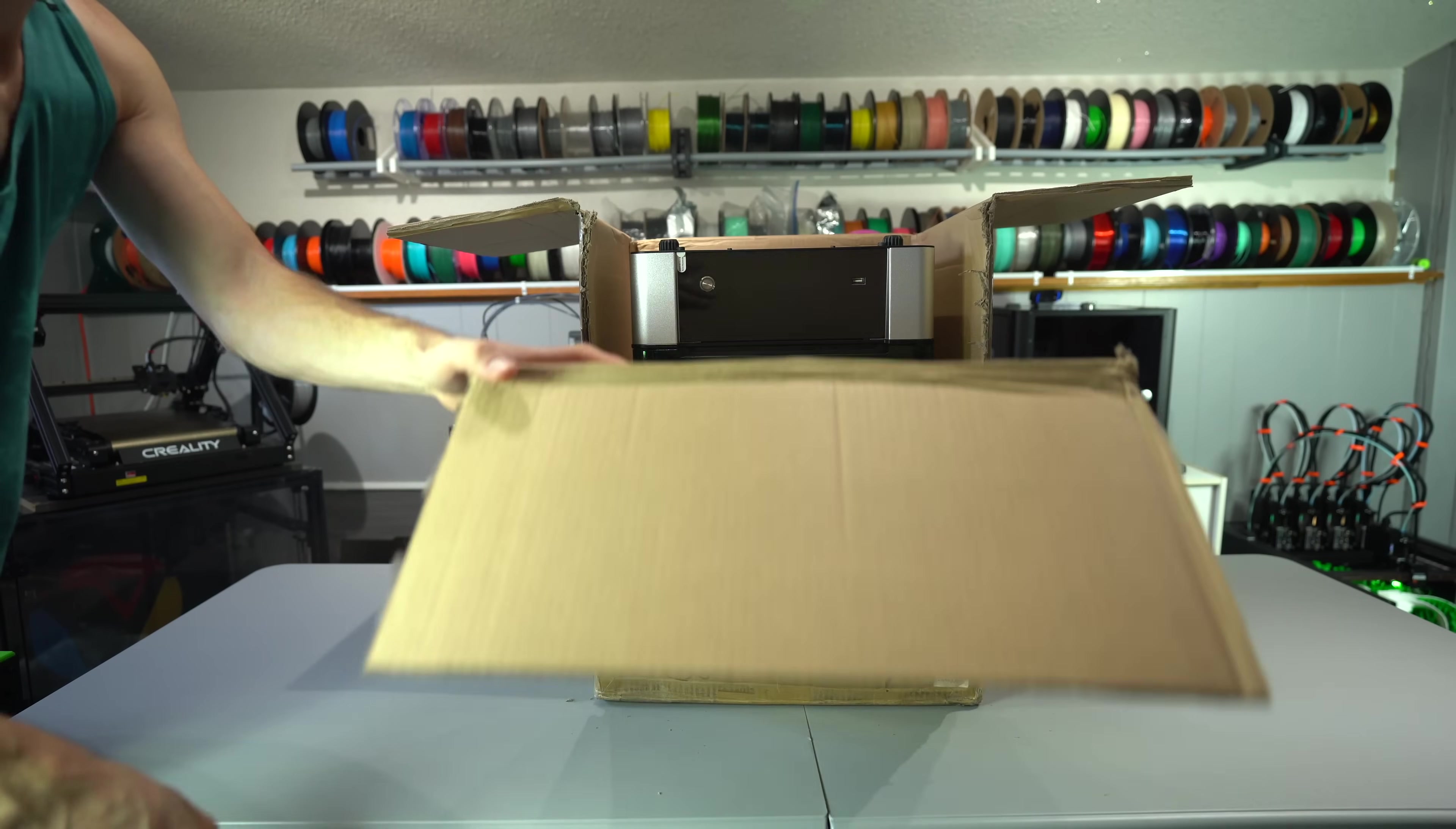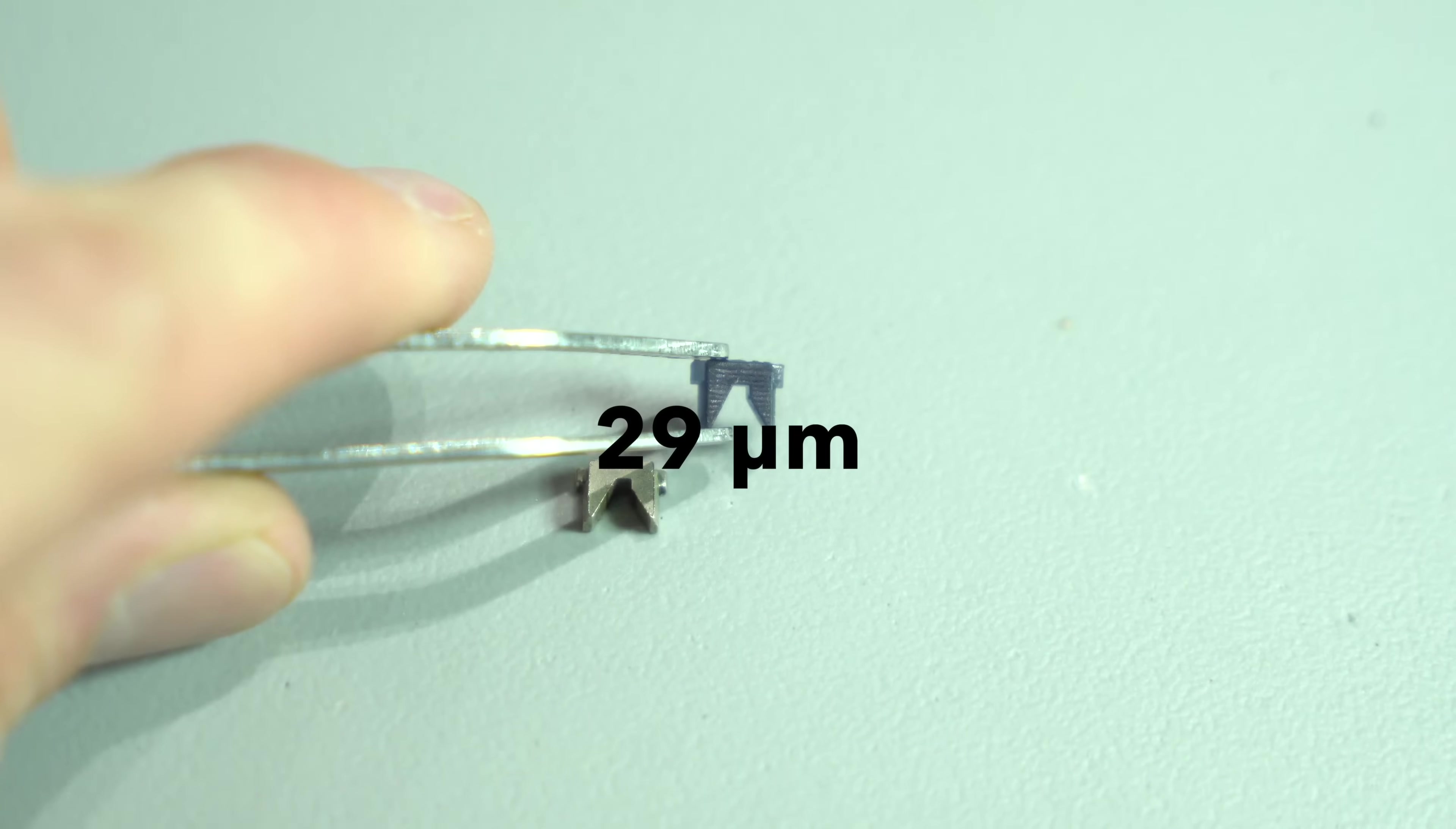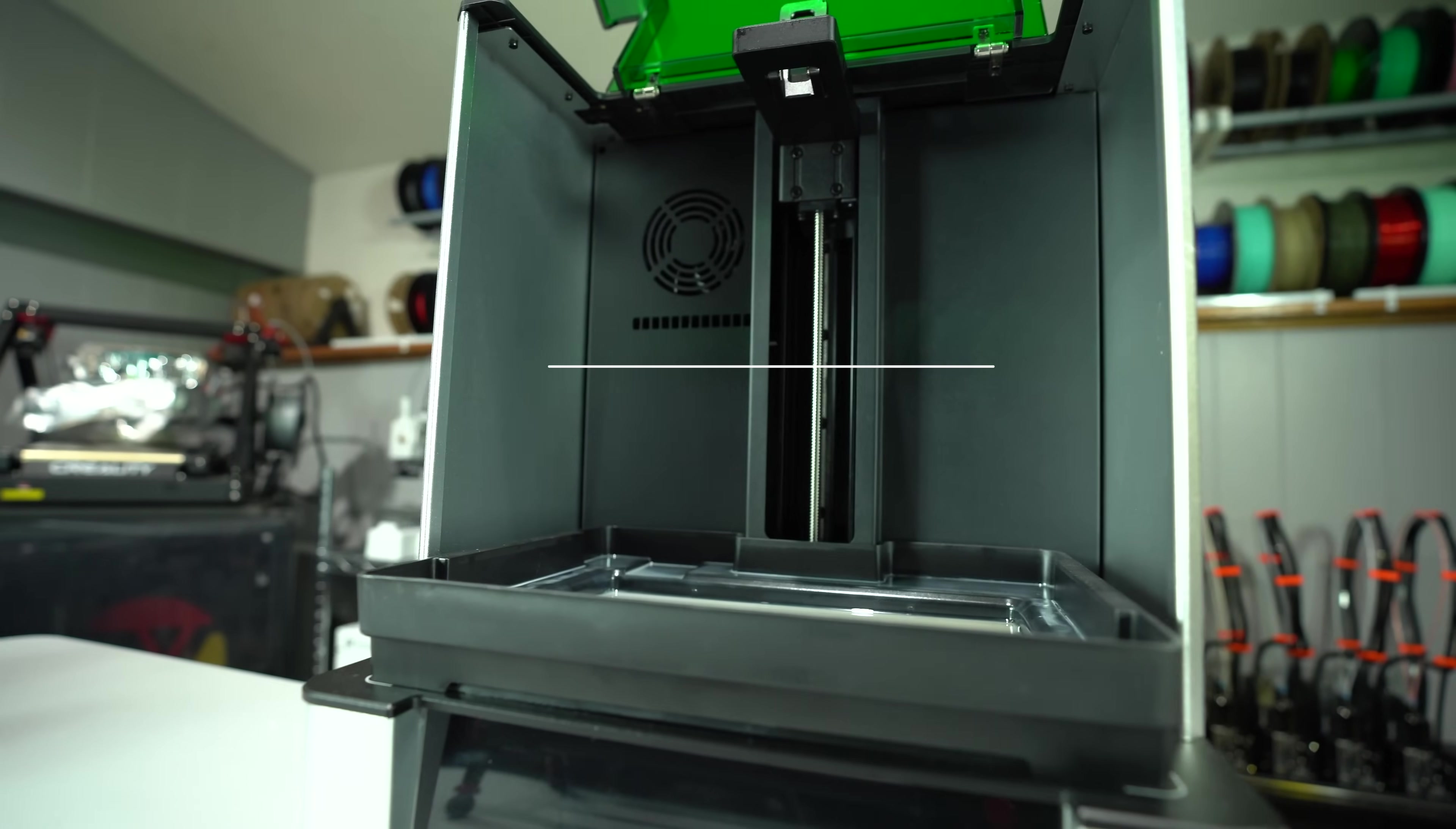Okay, let's start with the specs. We have an 8K monochromatic screen with a build area of 228 by 128, giving a pixel size of 29 microns. This is 42% smaller than the 50 micron pixels on my old Photon Mono Xs. The build height is 245mm, giving ample room for printing taller models.